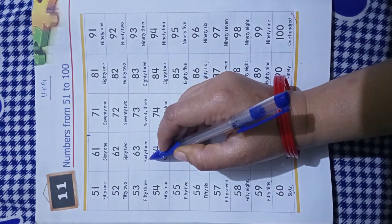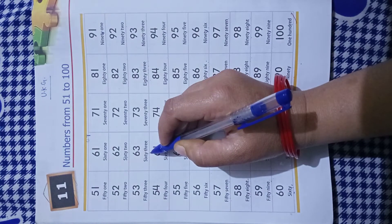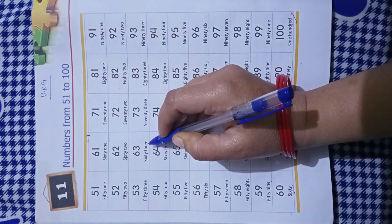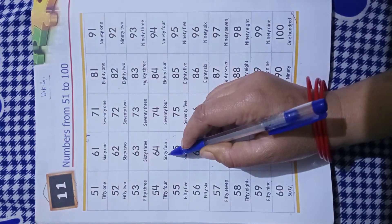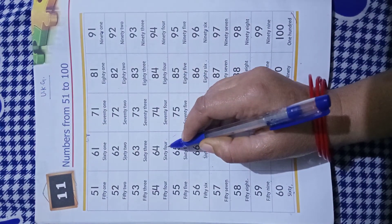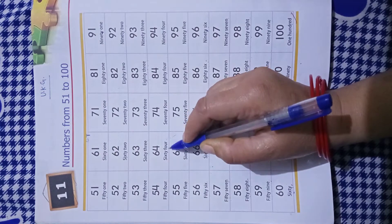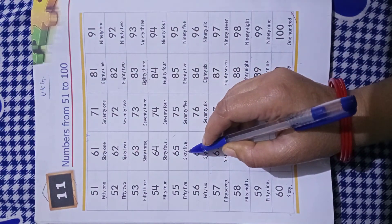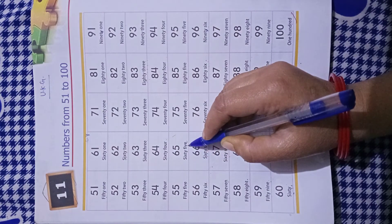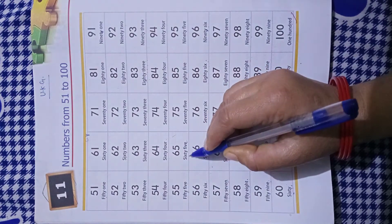SIXTY-60 THREE-3-63, SIXTY-60 FOUR-4-64, SIXTY-60 FIVE-5-65.